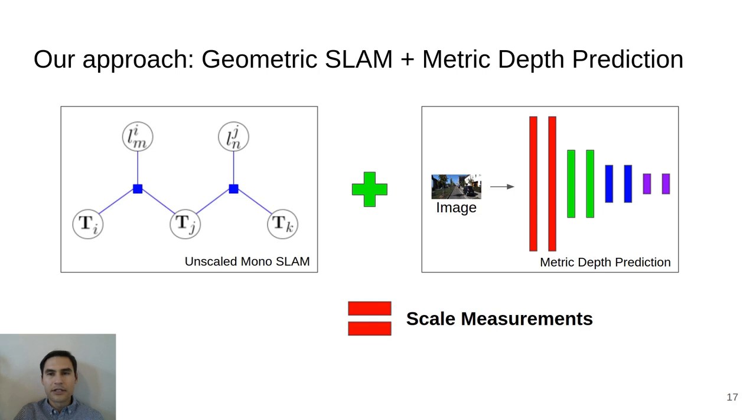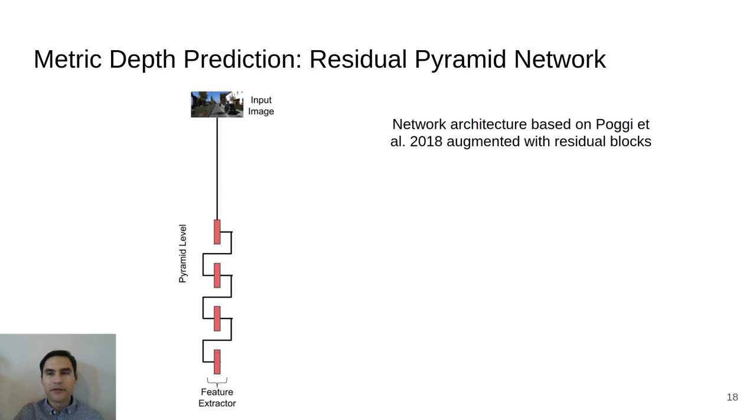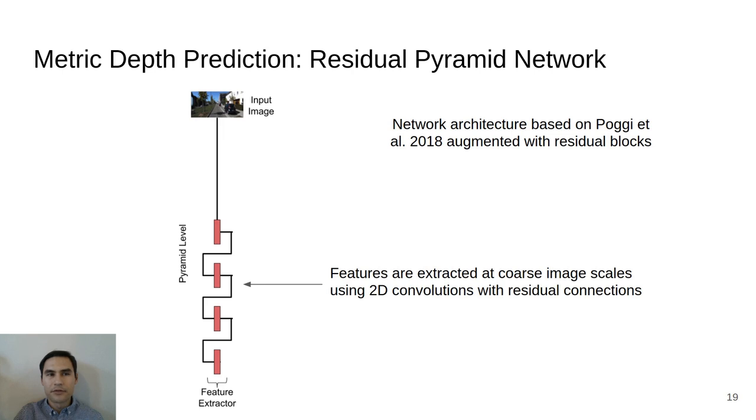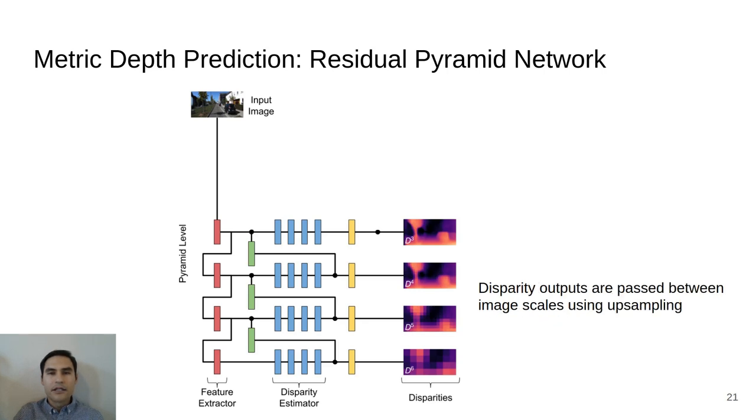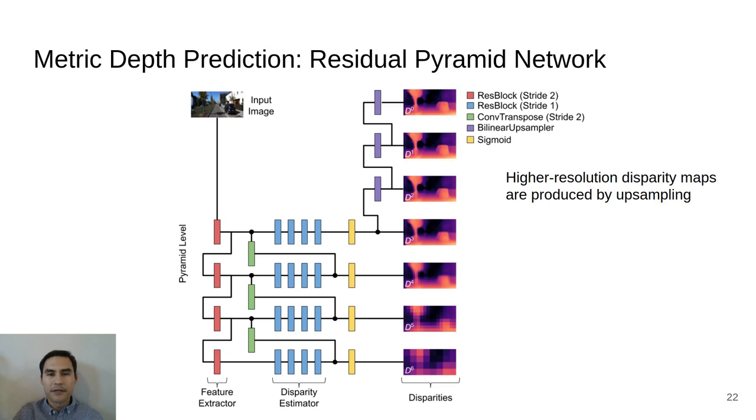Our metric depth prediction network is based on the pyramidal structure developed by Pog et al., but augmented with residual blocks to increase the expressiveness of the network and optimized for scale prediction. Features are first extracted from the input images at coarse image scales using 2D convolutions with residual connections. Disparities are then estimated at each image scale from these features using additional residual blocks. Disparities are passed between image scales using upsampling. Higher resolution disparity maps are also produced by simple upsampling.